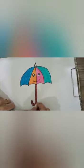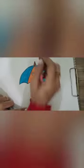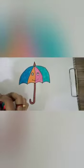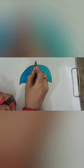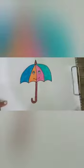Aur isi color se aap jo iska upper triangle hai, woh bhi kar sakte ho, okay? Then we will color the eyes. Eyes mein hum aise blue color kar lenge. And see, this is umbrella.